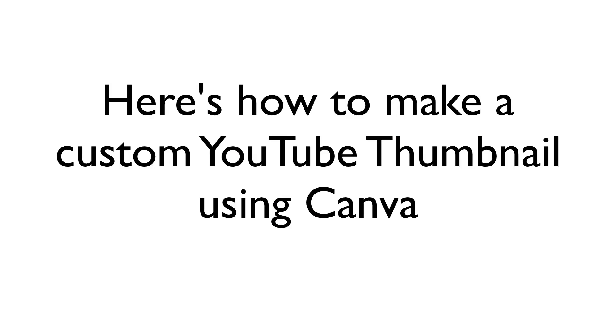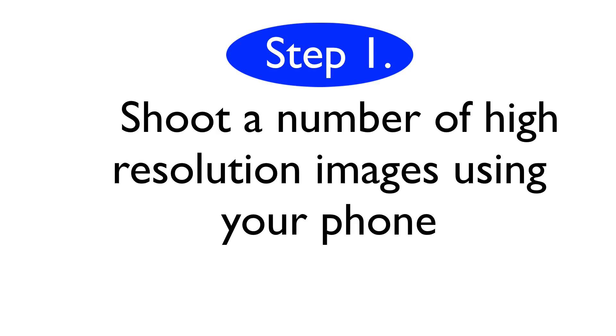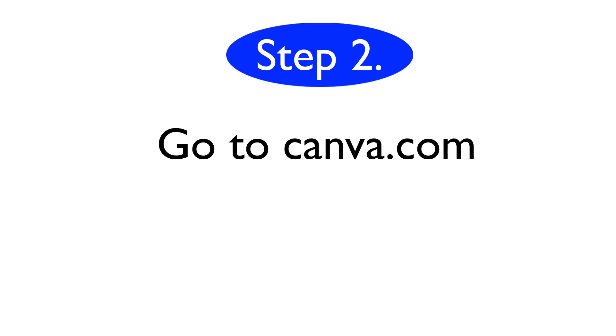Here's how to make a custom YouTube thumbnail using Canva. Step one: shoot a number of high-resolution images using your phone. I simply create a short video showing the different poses, then pull individual frames from that footage.